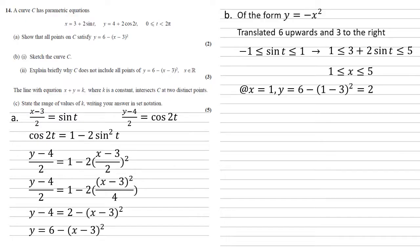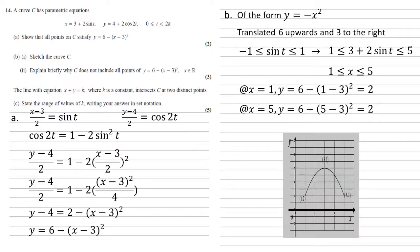So at x equals 1, y is equal to 2. And at x equals 5, y is also equal to 2. So our graph will look like this.